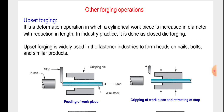Offset forging (upsetting). It is a deformation operation in which a cylindrical workpiece is increased in diameter with a reduction in length. In industry practice, it is done as closed die forging. Offset forging is widely used in the fastener industry to form heads of nails, bolts, and similar products.